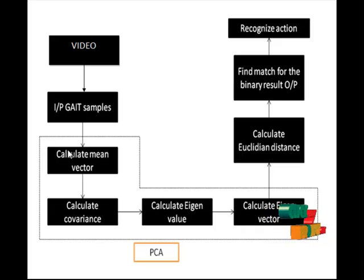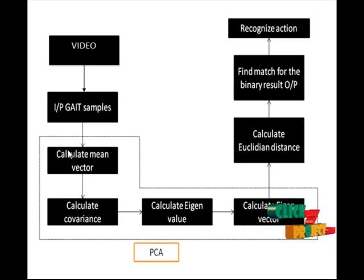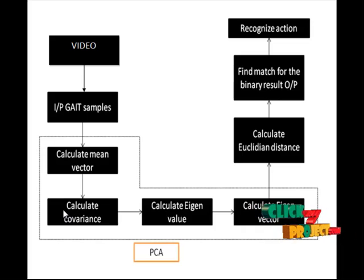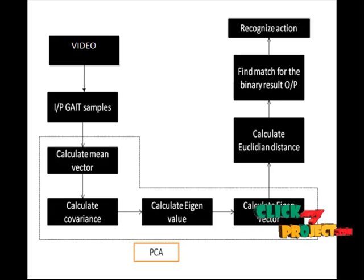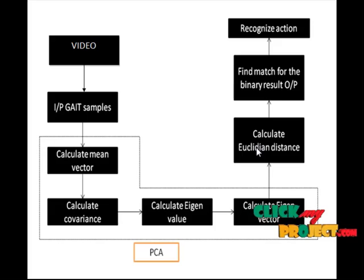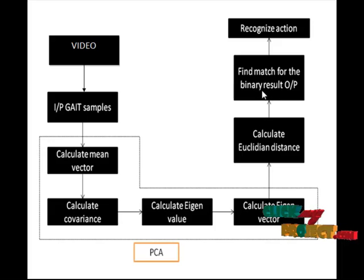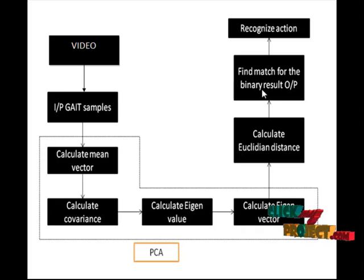In PCA, the first step is to calculate the mean vectors for each and every frame. Then covariance values are calculated from the mean vector values. From these covariance values, eigenvalues and eigenvectors are calculated. The output from PCA is the eigenvector value. These eigenvectors are used to calculate the Euclidean distances between the trained samples and the testing eigenvectors. From this value, it checks the matching of the binary output result, and finally we recognize the action of the given video.